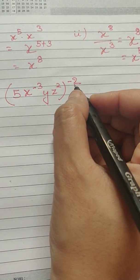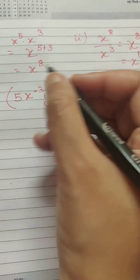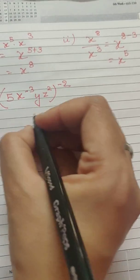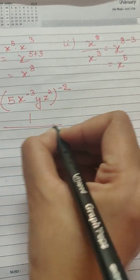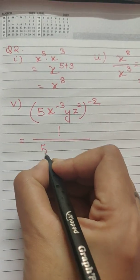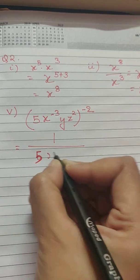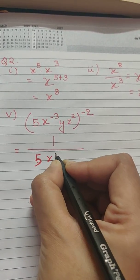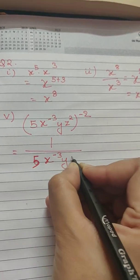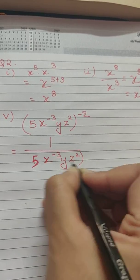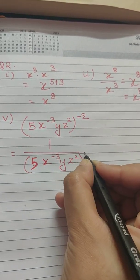As it is negative, what we have to do is reciprocate. So upon reciprocating, we will get 1 by 5x to the power minus 3 yz square, whole raised to the power 2.